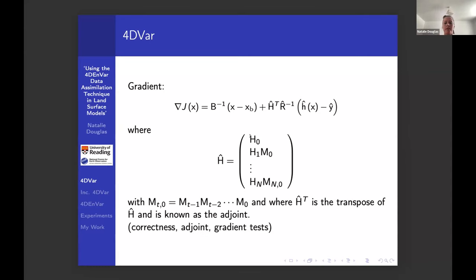It's just basically products of Jacobians that you get from the chain rule if you have to differentiate a chain at each time step. If we're doing this, we have to make sure that we do the correctness tests and test the adjoint and do gradient tests, which applies for most optimization problems anyway.